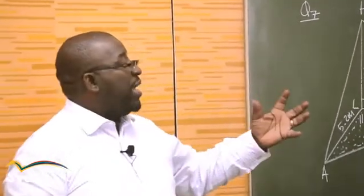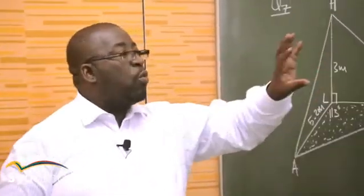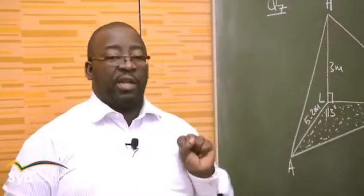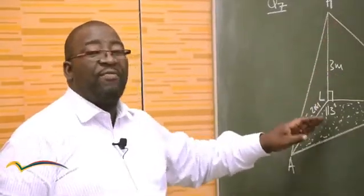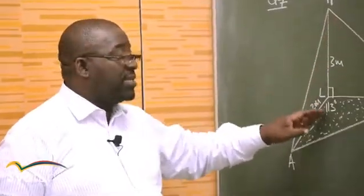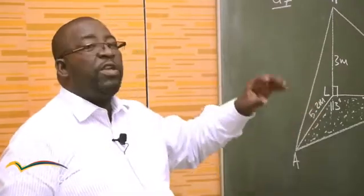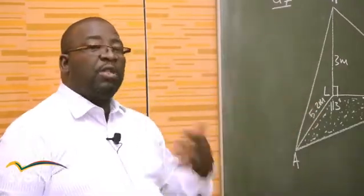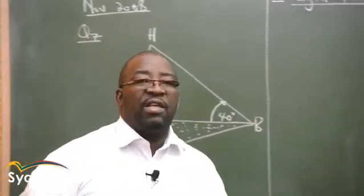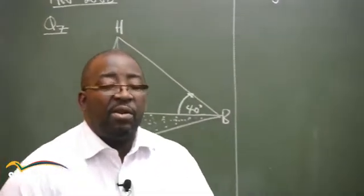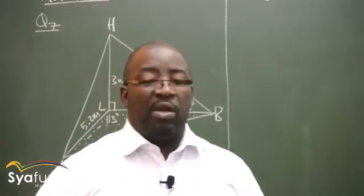Looking at this triangle, whenever you see this triangle, that's where you use the trig ratios. But if you look at these other two triangles, they don't have any 90 degrees. Hence, when you refer to these two triangles, that's why we use this topic called triangle formulae. Remember, there are only three rules: the sine rule, the cosine rule, as well as the area rule.